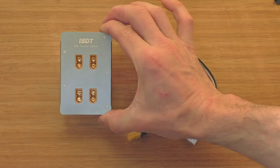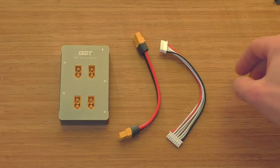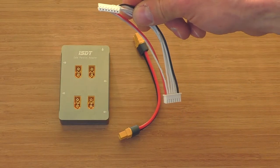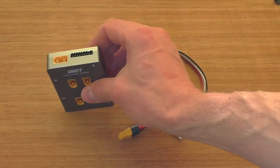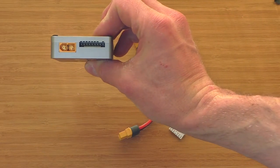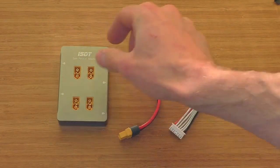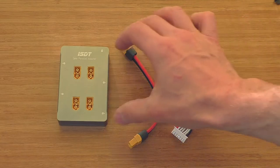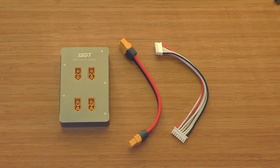Inside the box we have the actual adapter, the power lid and the balance lid. Oddly enough the balance lid is only for 6S batteries whereas the adapter is compatible with 8S batteries. So there's a little bit of a mismatch here but I don't think this is going to be a big problem. But if you want to charge 8S batteries you have to provide your own balance lid.